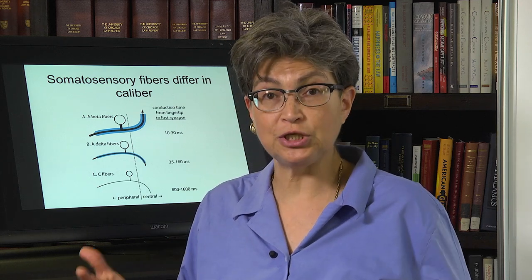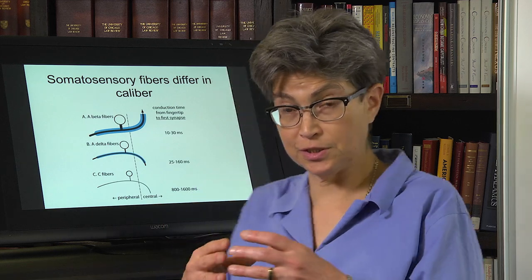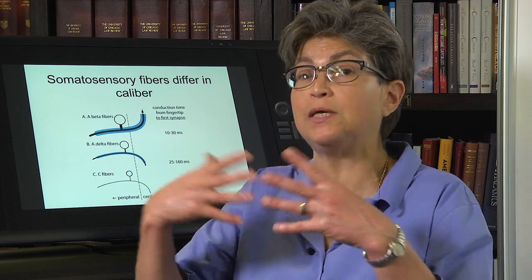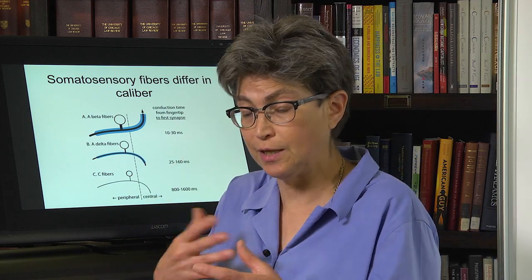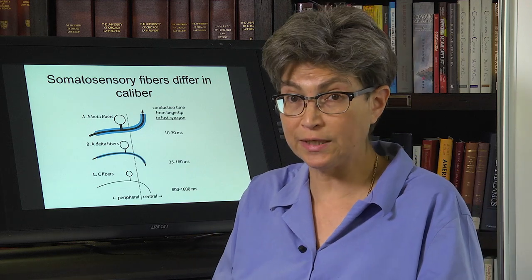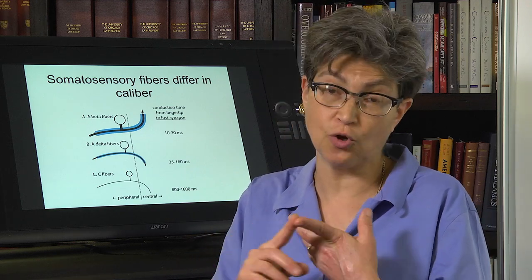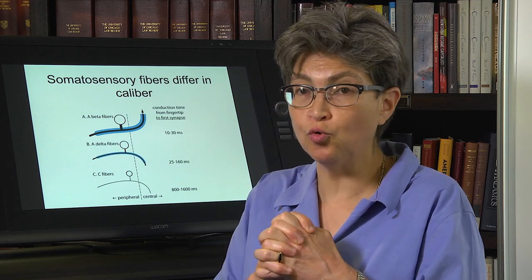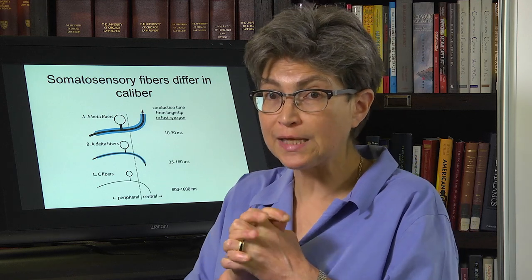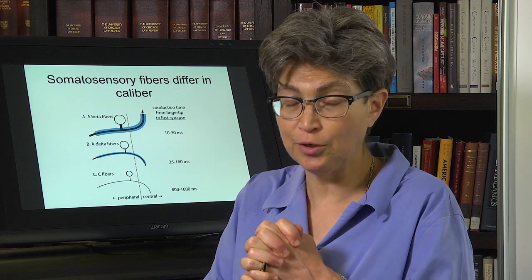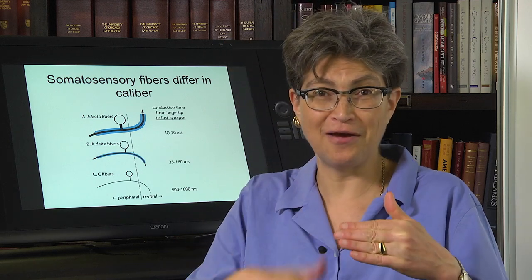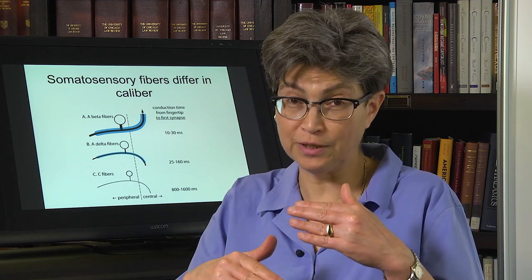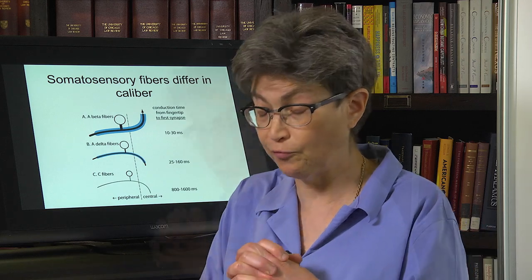There are also sensations that are compound sensations — sensations where two different inputs are built within the central nervous system into an interpretation. The best example of that is wetness. Wetness is a combination of touch and cold. If you get into a pool that is skin temperature, it will not feel wet — you have to have a combination of touch with cold, and if there's no cold stimulus, it won't feel wet.